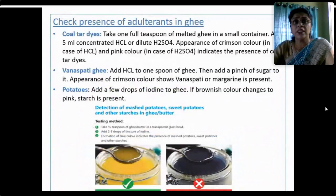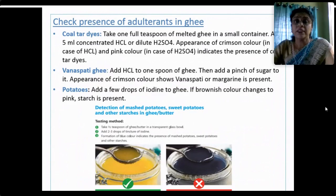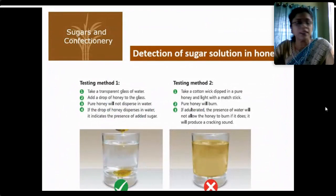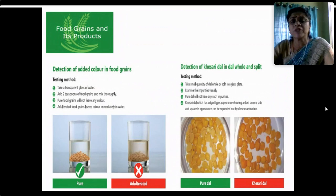For ghee: ghee is adulterated with coal tar dye, vanaspati, mashed potatoes and HCl. To test for mashed potato starch in ghee, take a few drops of iodine in ghee — a brownish color changing to pink indicates starch is present. For honey: take a transparent glass, add a drop of honey — pure honey will not disperse, but if the drop disperses in water it indicates presence of added sugar. For food grains: take a few teaspoons in water — pure food grains will not leave any color, but if adulterated, color will immediately appear in the water.